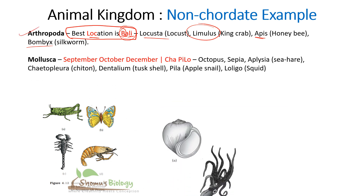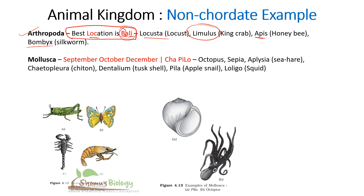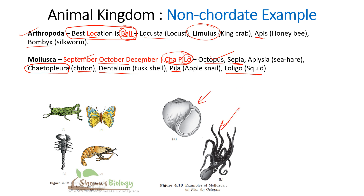For Mollusca, remember 'September, October, December — Cha Pilo': October → Octopus; September → Sepia; December → Dentalium. Then Cha Pilo: CHA gives Chiton (Ketoplura); PI gives Pila; and LO gives Loligo (squid). So Octopus, Sepia, Dentalium, Chiton, Pila, and Loligo are all examples of Mollusca.